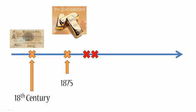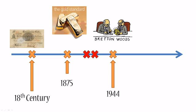The gold reserves were rapidly depleting, and it got to a point when they couldn't actually guarantee all that money with gold, and therefore the gold standard lost its meaning.